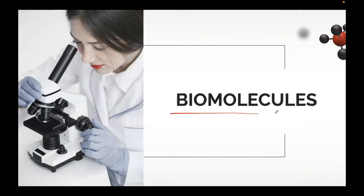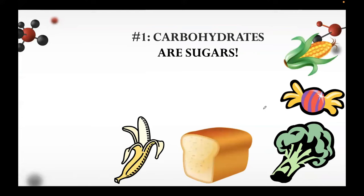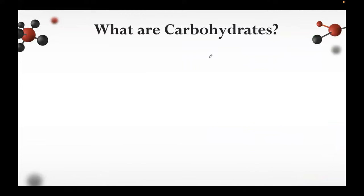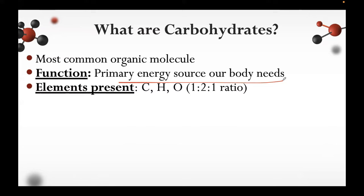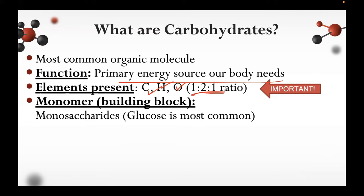Let us now move forward to the general overview of our biomolecules. Biomolecules — 'bio' meaning life and 'molecules' meaning atoms joined together. Number one is carbohydrates — these are your sugars. Carbohydrates are the most common organic molecule. Their function is to serve as the primary energy source the body needs. Their elements include carbon, hydrogen, and oxygen, and the important ratio of carbon to hydrogen to oxygen is 1:2:1 — do not forget. The building block or monomer of carbohydrates is the monosaccharide, and glucose is the most common.